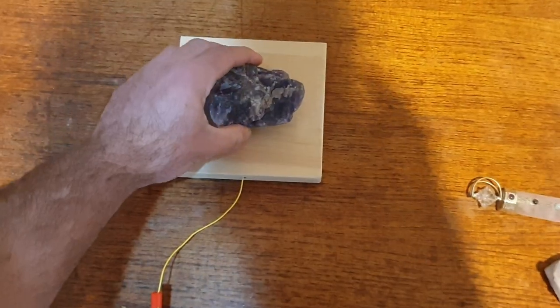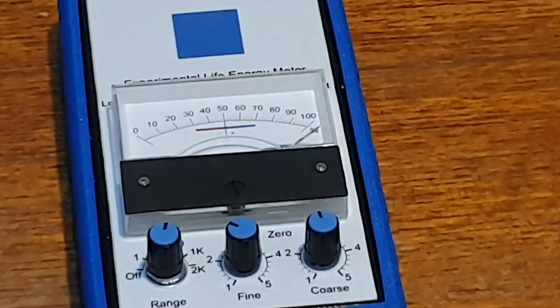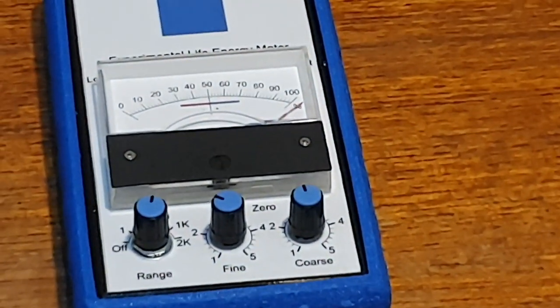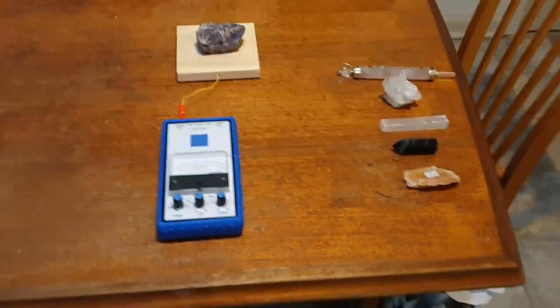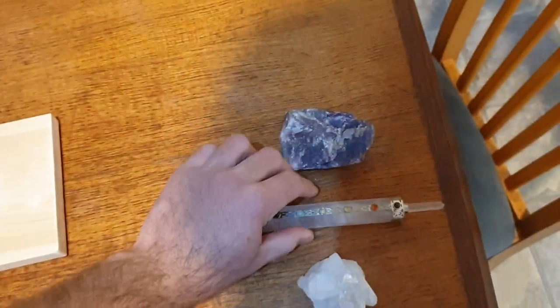So this is just your amethyst. I'll place it on here. We'll take a step back, and I'll zoom in, so you can see the needle. So you can see how it's maxed out, and it's gone past 100%. Now, the rose quartz is exactly the same, so I'll chuck that on there.